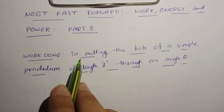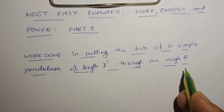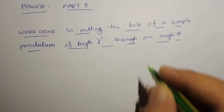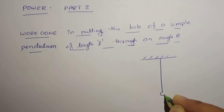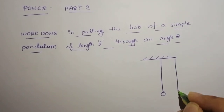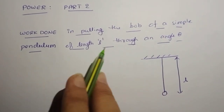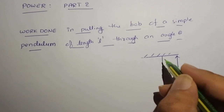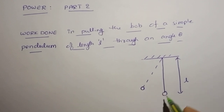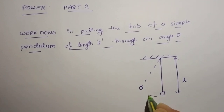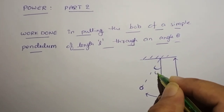The first situation: work done in pulling the bob of a simple pendulum of length L through an angle theta. We will consider one simple pendulum. This is the bob, and the length of the pendulum is L. This pendulum has to be pulled through an angle theta, so this is the new orientation of the bob. The angle that the pendulum makes with the vertical is theta.